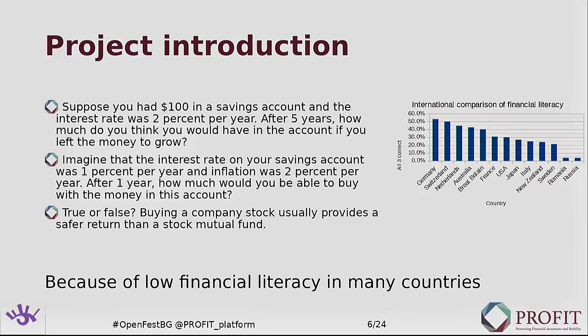The first two questions are based on very basic mathematics and the last one is about probability. Whoever is able to answer all three questions correctly is actually a minority in their country or region. The answers relate to compound interest, how inflation eats away compound interest, and how to make sure you are not risking everything by investing money in a single company. What we hope to achieve is to make those percentages higher — so more people know the answers and know how to manage their money.